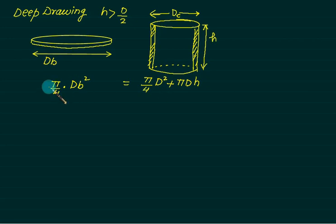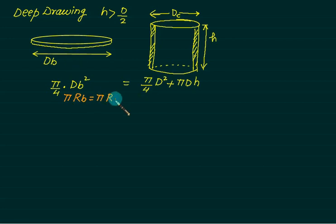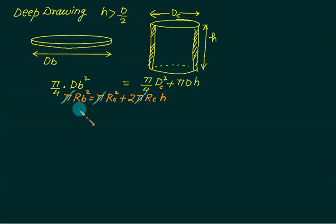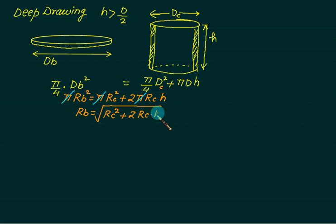To find the blank diameter for a cup without flanges or round edges, we apply a surface area balance. Using radius notation: π·Rb² = π·Rc² + 2π·Rc·H. Cancelling π gives Rb² = Rc² + 2·Rc·H, so Rb = √(Rc² + 2·Rc·H).